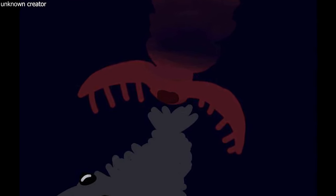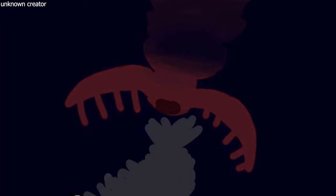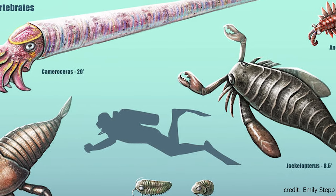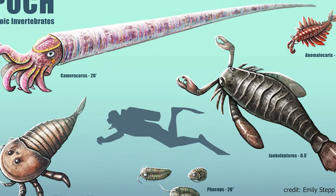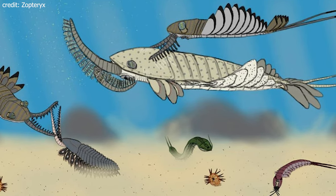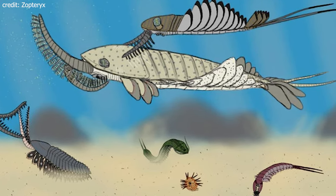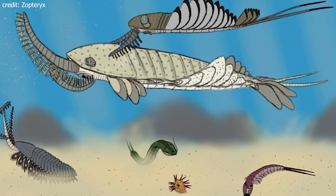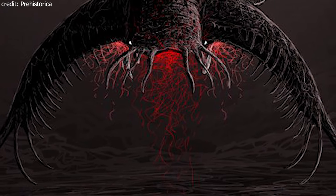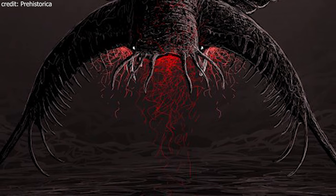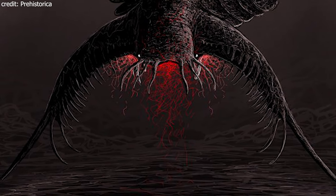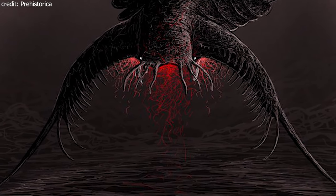Omnidens is an important fossil for science. It is one of the earliest known animals with a complex oral apparatus. Omnidens is a fascinating animal that gives us insights into the early evolution of Paleozoic animals. It was either a predator or filter feeder that fed on small animals or microorganisms, and was certainly at the top of the Cambrian food chain.